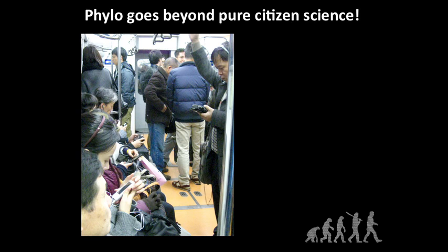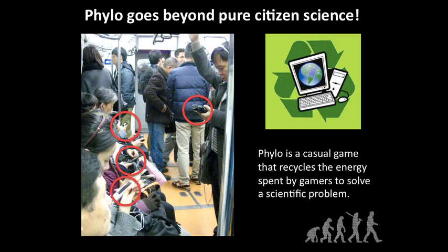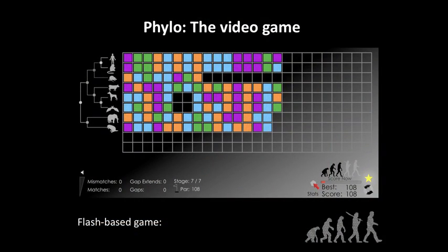Philo goes beyond the classical citizen science approach. Classical citizen science creates interfaces that ask you to do the same work as scientists, with no barrier between you and the science. Philo instead aims to transform the multiple sequence alignment problem into a very simple game that everybody can play anytime, anywhere. Looking at a picture of people on their phones, they're most likely playing simple games to pass the time. We want to recycle that energy — time that looks useless but, thanks to Philo, won't be.